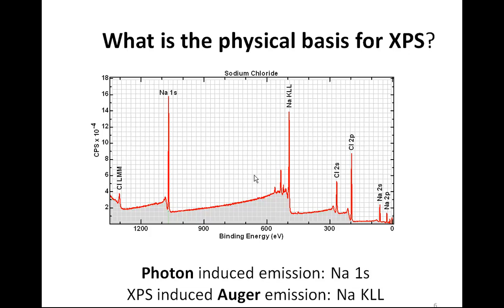Up to this point, I've been describing photoelectron peaks that are a consequence of a photon scattering an electron — for example, sodium 1s, chlorine 2s, and chlorine 2p. These are all peaks that exist because photons have scattered an electron and the electron has been ejected at the time of the ionization.